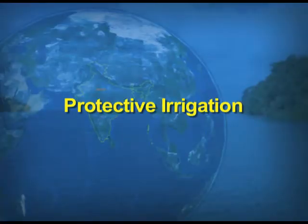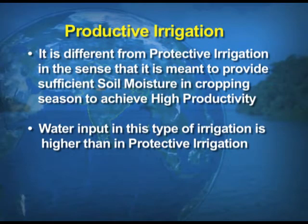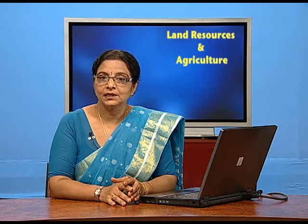Protective irrigation helps in protecting crops from the adverse effects of moisture deficiency, acting as a supplementary source of water in addition to rainfall. Productive irrigation is different — it is meant to provide a sufficient amount of moisture during the cropping season to achieve high productivity. For crops which require a high amount of moisture, if we don't have sufficient rainfall, we have to depend upon productive irrigation.